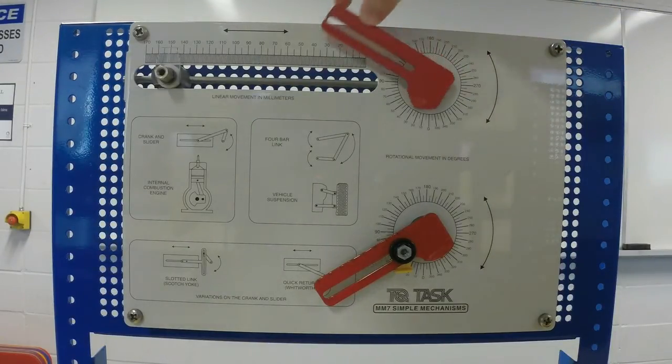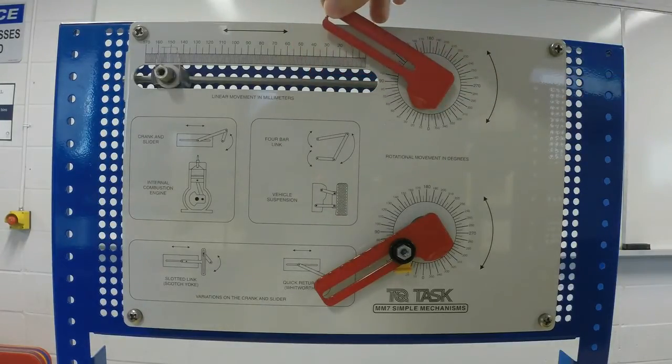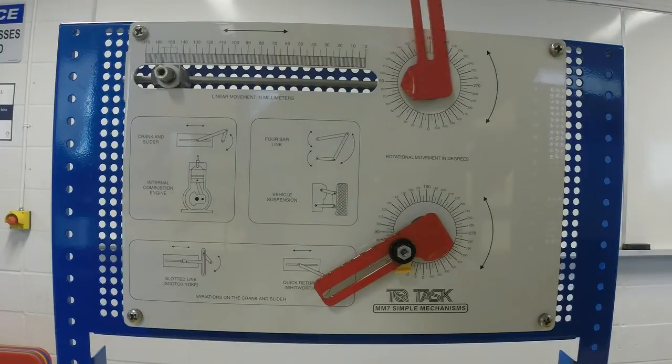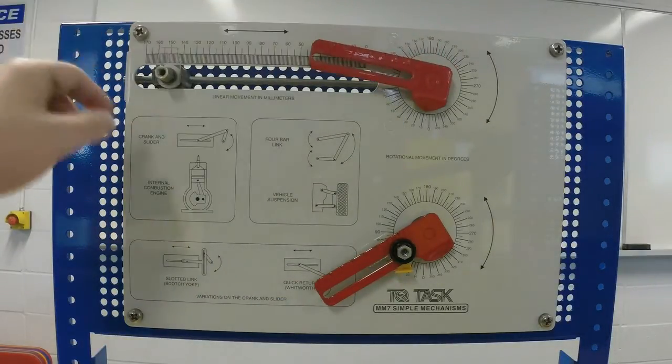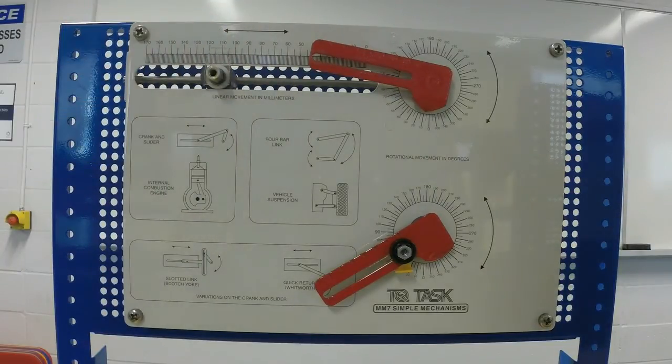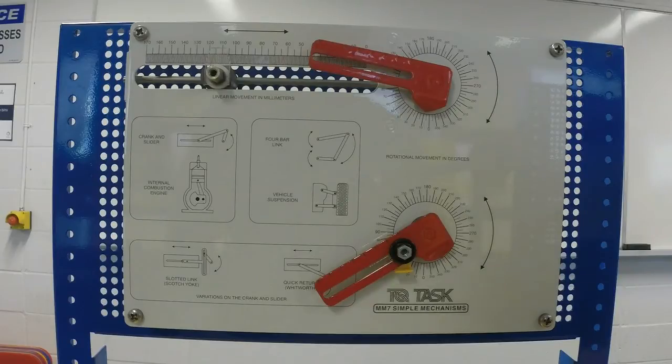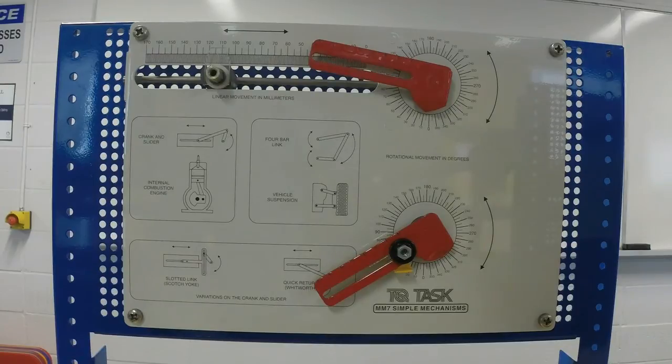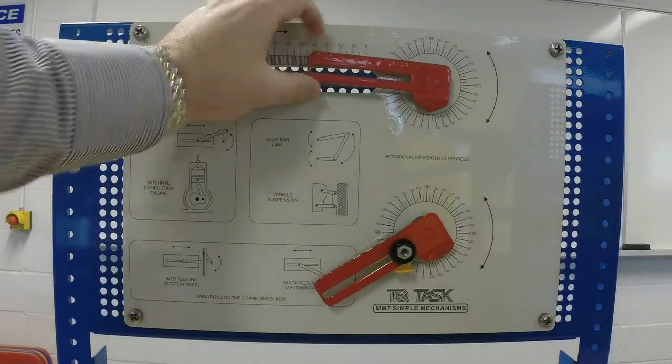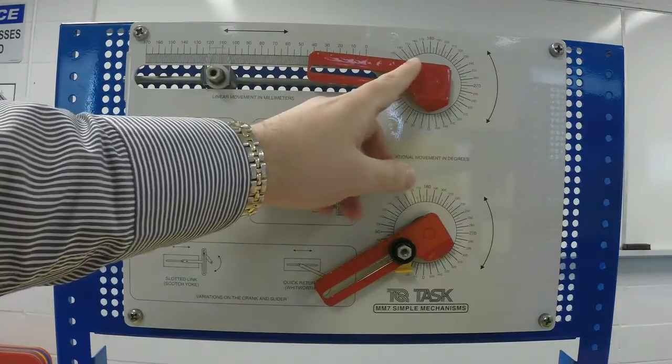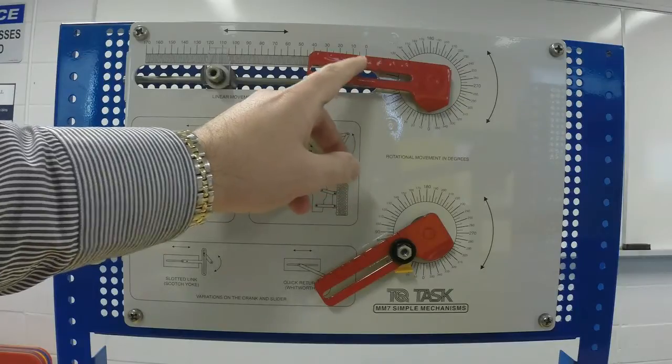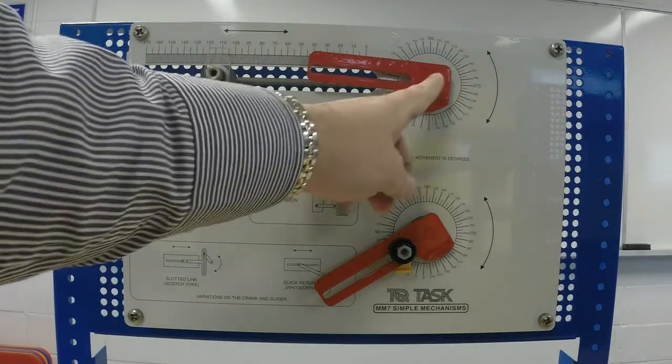So the procedure says to assemble the crank slider with a crank length of 60 millimeters and a connecting rod coupler length of 150 millimeters as shown. Let me explain what that means. If you see this, the pivoting point of the center is here and there are indentations here which are 10 millimeters away from each other. So there's 20 from the center to the first, 30, 40, 50, 60.